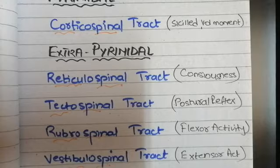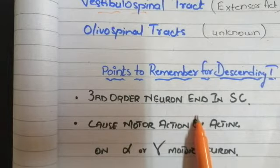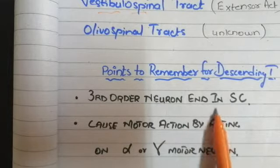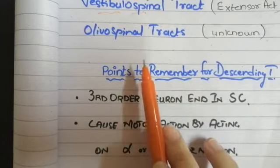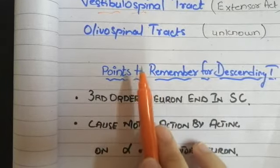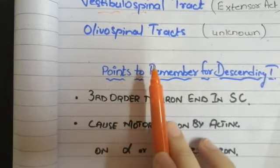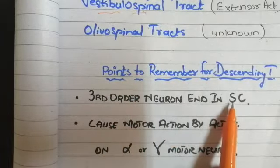Before discussing each pathway in detail, we need to remember a few key points about the descending tracts. The third-order neuron of all these descending tracts ends in the spinal cord. As seen in the names — vestibulospinal, reticulospinal — the suffix 'spinal' indicates that they end in the spinal cord.